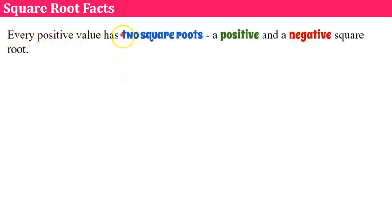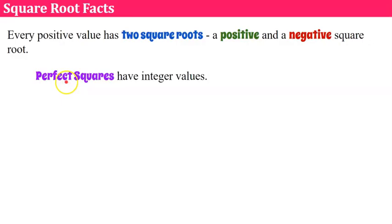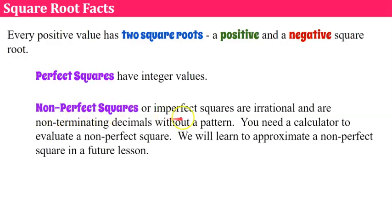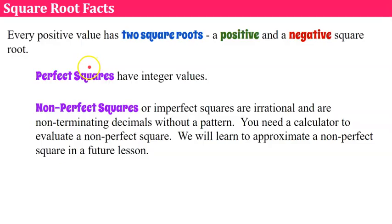Here are some facts about square roots. Every positive value has two square roots — a positive and a negative square root. Perfect squares have integer values. Non-perfect squares are irrational and are non-terminating decimals without a pattern. You'll need a calculator to evaluate a non-perfect square. Today we're going to focus on perfect squares, meaning you can find the square root using math facts.